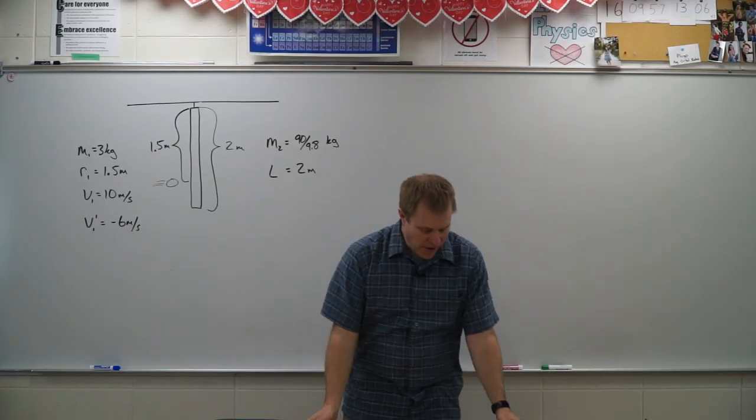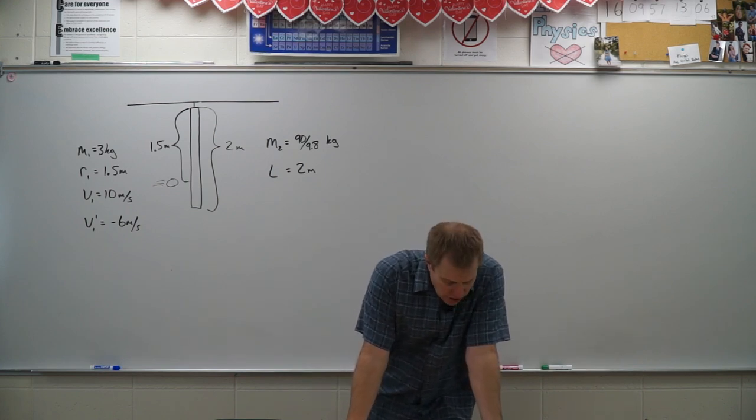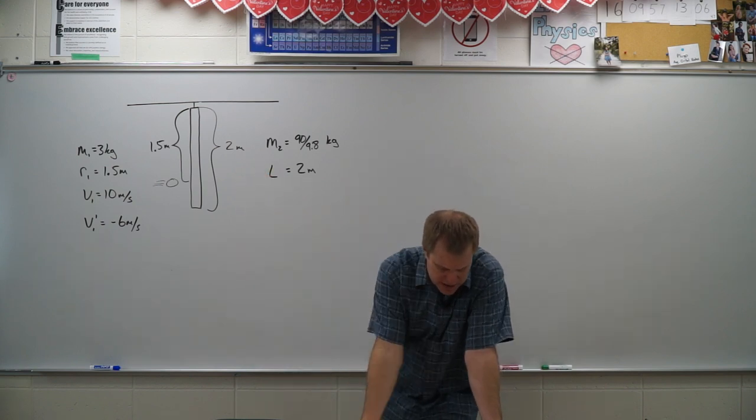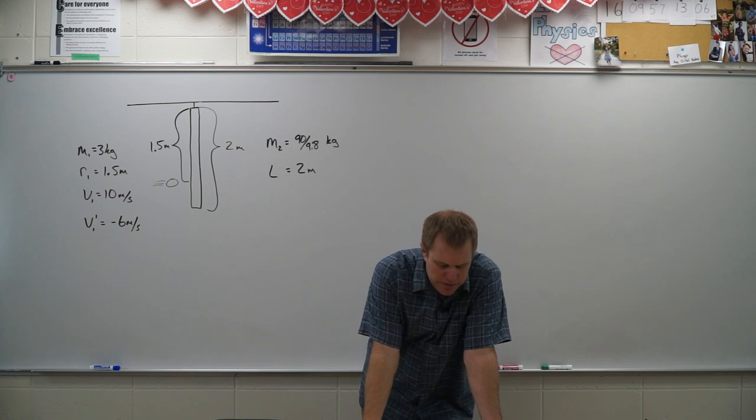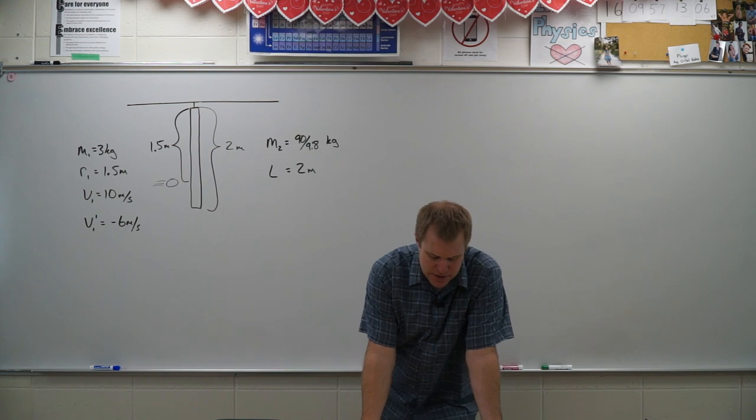Let's do another question here. So I have a thin uniform metal bar two meters long and weighing 90 newtons. It's hanging vertically from the ceiling by frictionless pivot. Suddenly it's struck 1.5 meters below the ceiling by a small three kilogram ball initially traveling horizontally at 10 meters per second. The ball rebounds in the opposite direction with a speed of six meters per second.